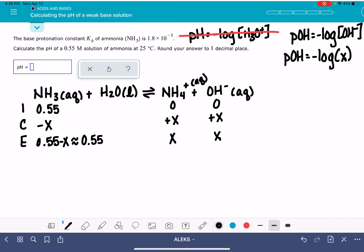And if we know the pOH, then we can come up with the pH, because pH plus pOH is equal to 14.